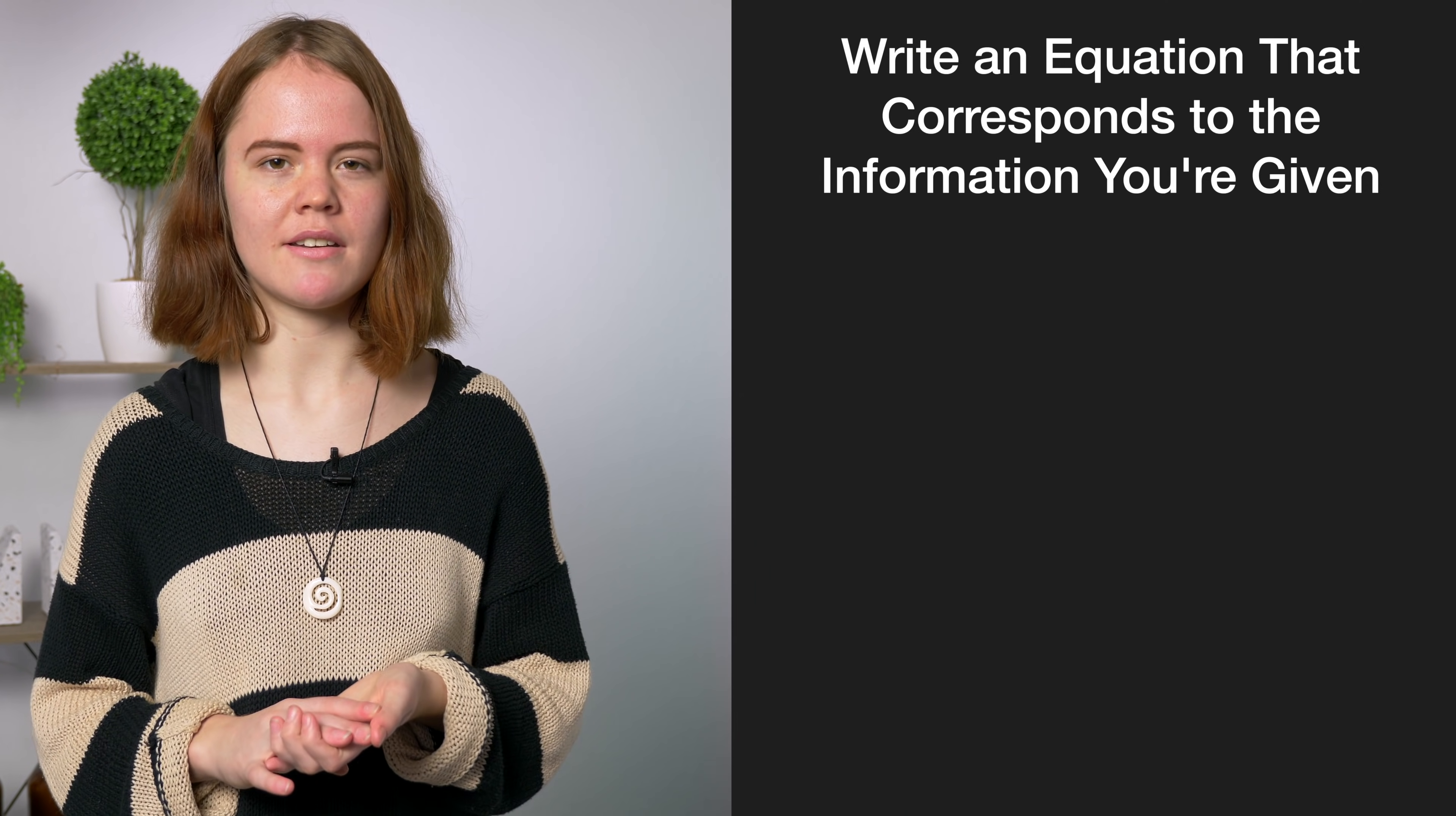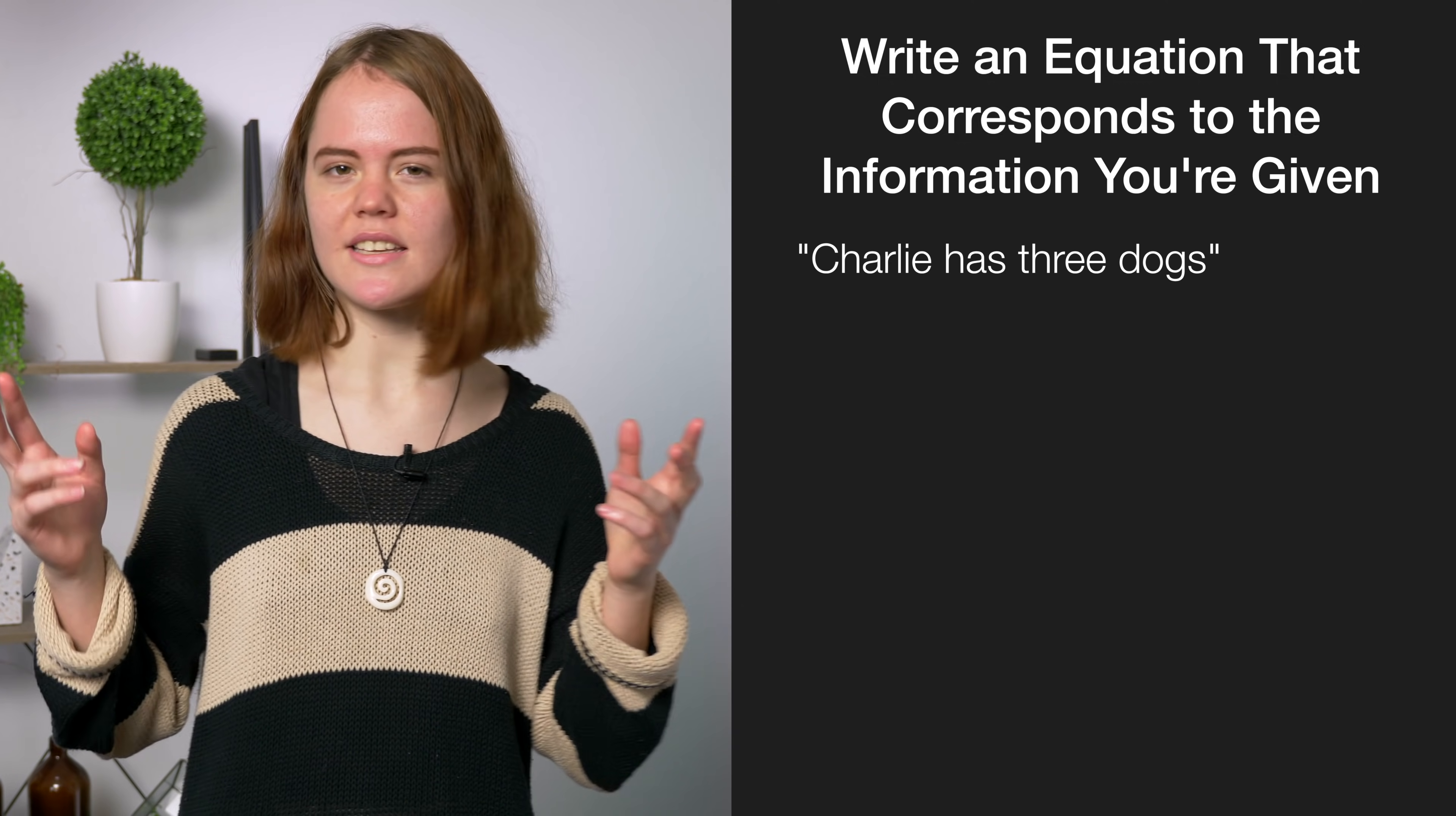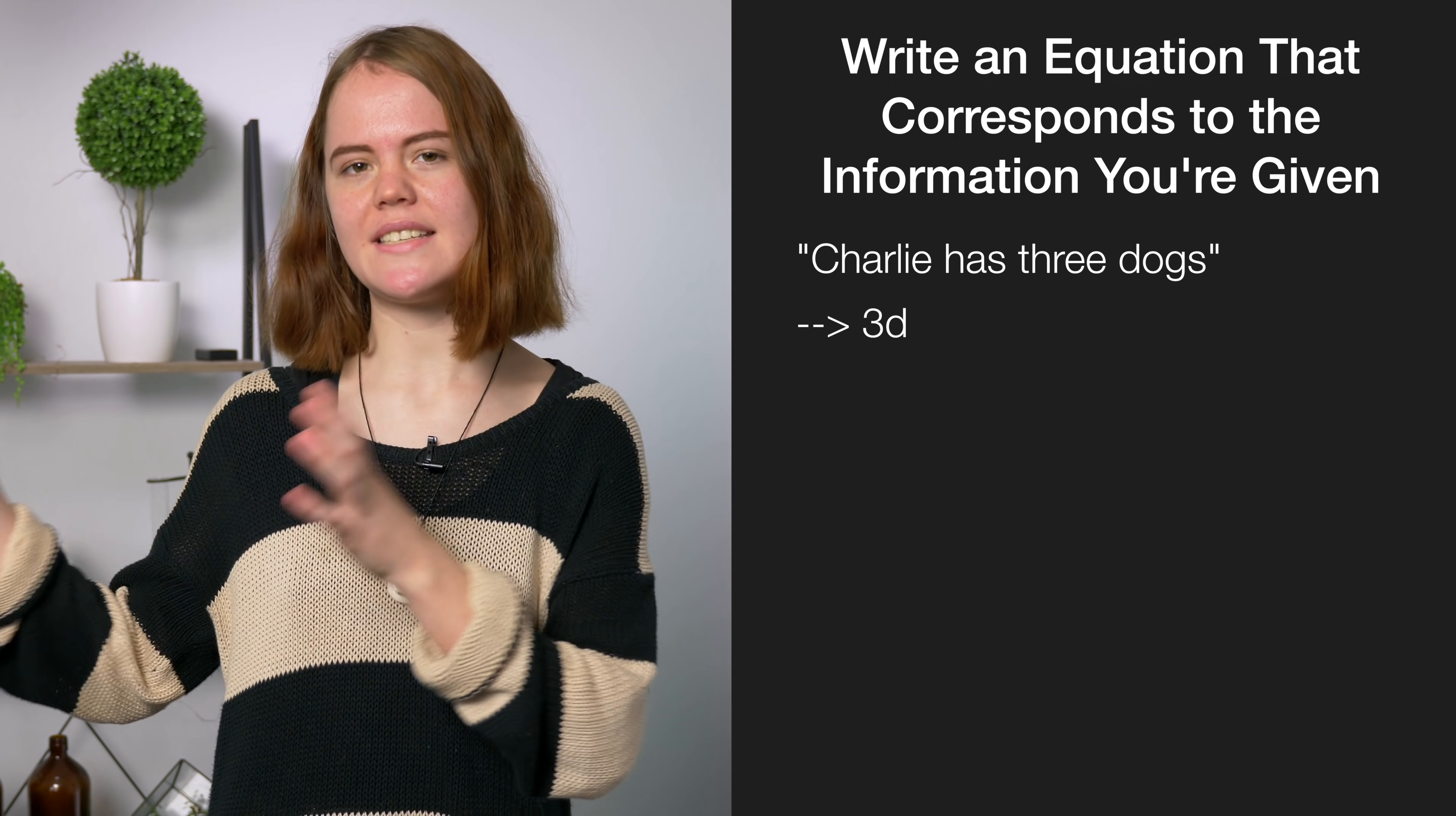To help you figure out what skill to use, the first thing you should do for any word question is write an equation that corresponds to the information you're given. Figure out the key numbers and what variables they correspond to. For example if the question said Charlie has three dogs you might want the term 3d in your equation.